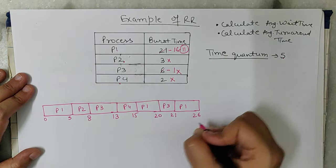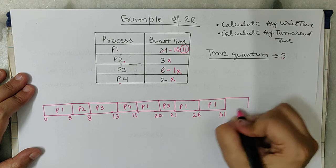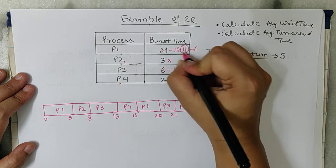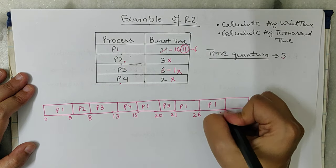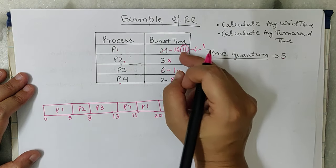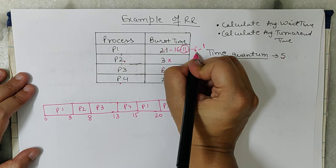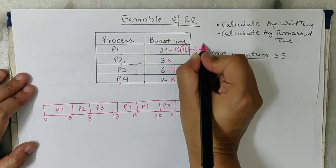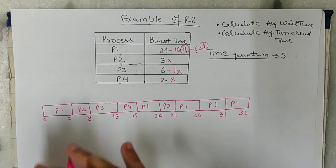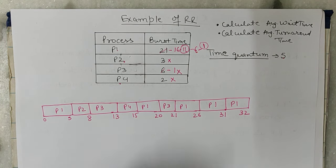P1 runs from 21 to 26, then leaves the CPU. It had 11 minutes remaining, now it has 6. P1 gets the CPU again: 26 plus 5 equals 31, leaving 1 minute remaining. Then P1 gets its final slot: 31 plus 1 equals 32. This is how we break it into slots. The Gantt chart is now complete.